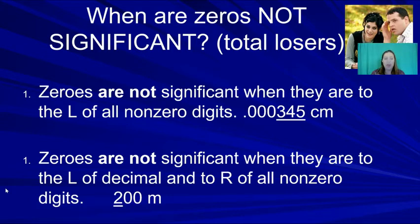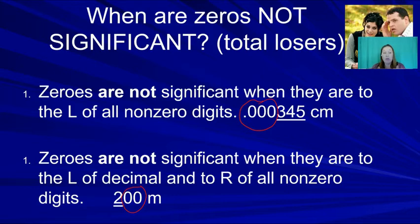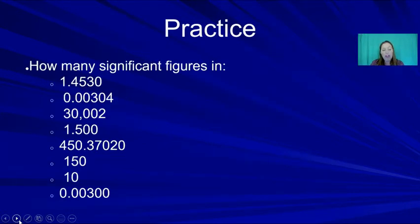Zeros are not significant when they are placeholders — making a number very large or very small. For example, 0.000345 — those leading zeros just make 345 a very small number. You could write it as 3.45 × 10⁻⁴, showing only 3 significant digits. Similarly, 200 has only 1 significant digit, as the zeros are just placeholders after the 2.